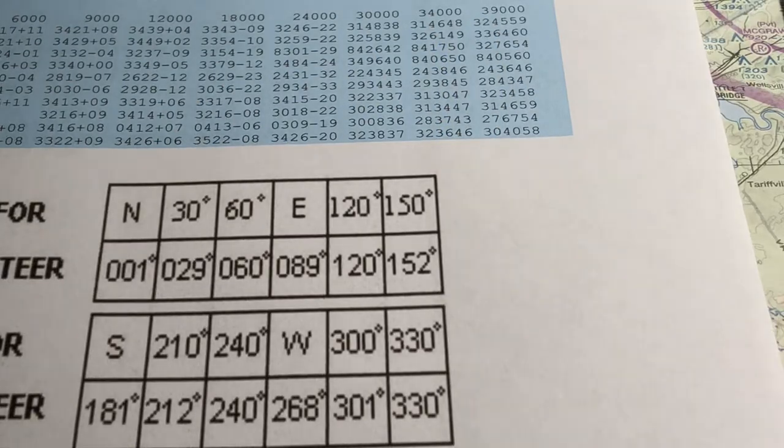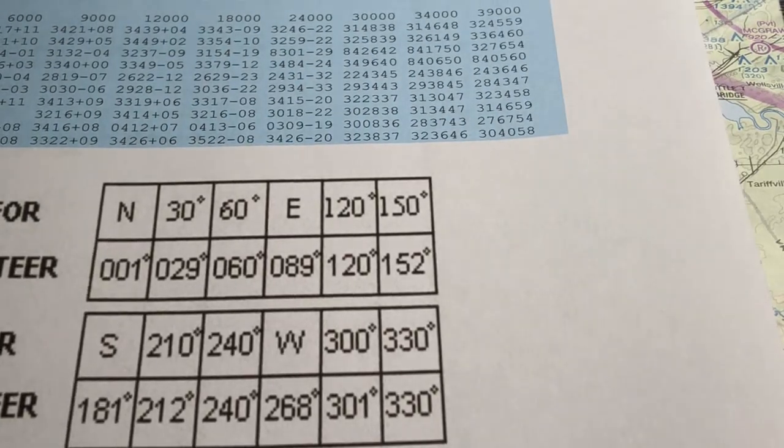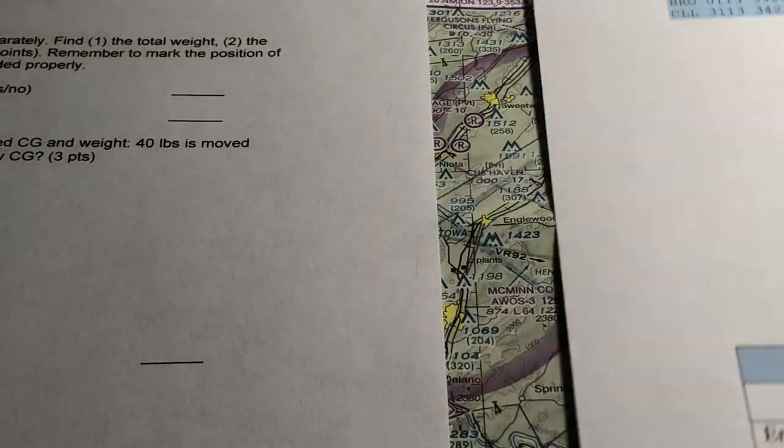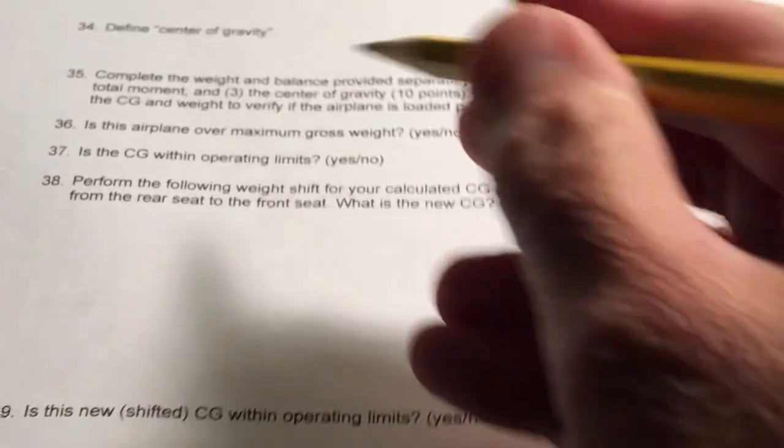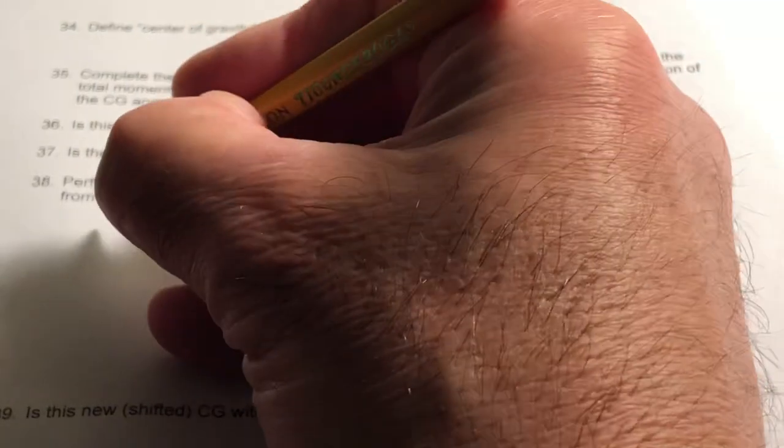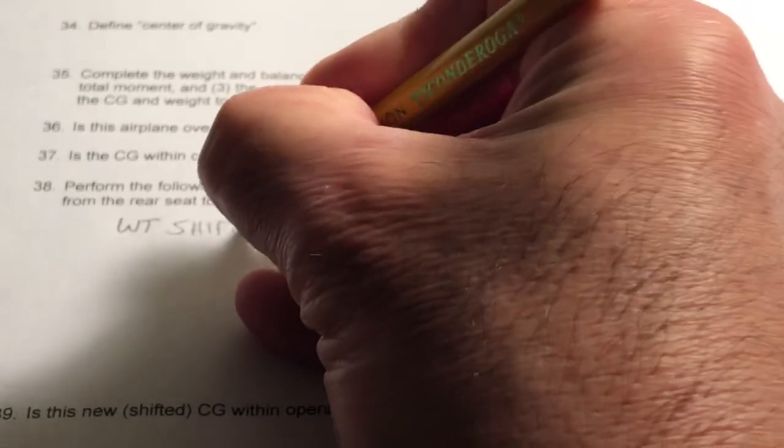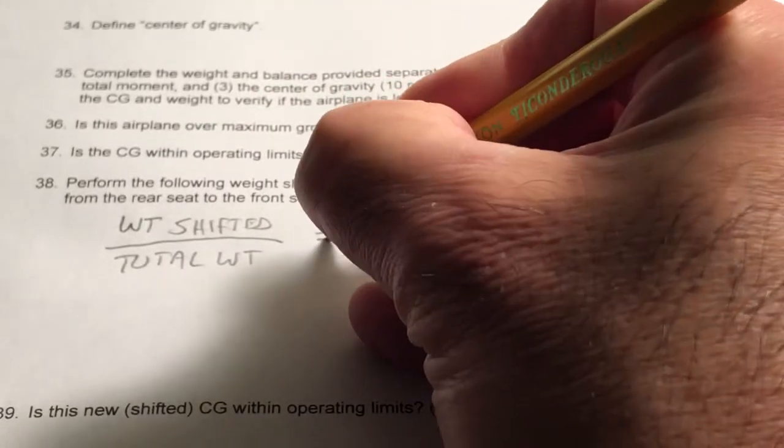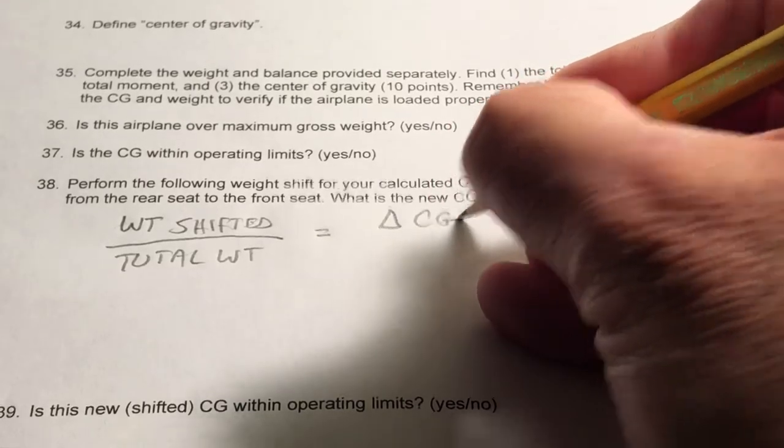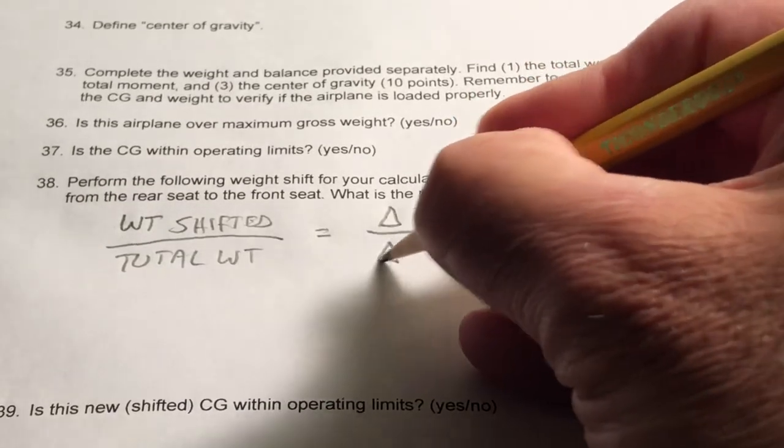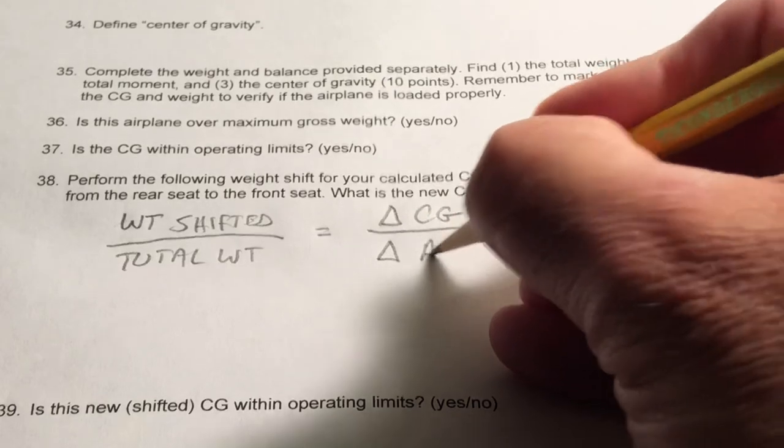So the next thing we need to do is the weight shift calculation. The weight shift formula is the weight shifted divided by the total weight equals the change in CG divided by the change in arm.